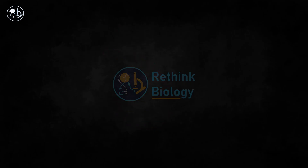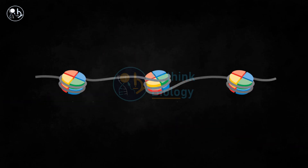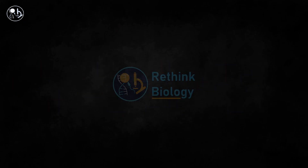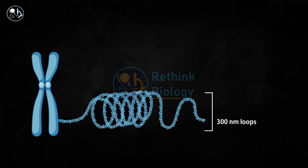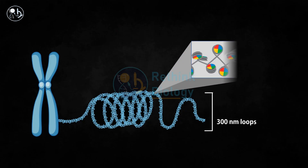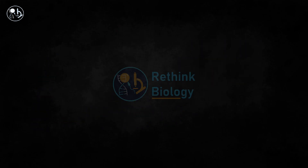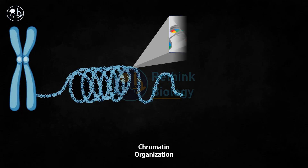Nucleosomes are arranged in a complex zigzag structure known as the 30 nanometer chromatin fiber. These fibers further form 300 nanometer loops. This is the general overview of chromatin organization.